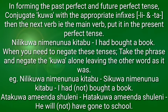In forming the past perfect and future perfect tense, we conjugate kuwa with the appropriate infixes: li for the past and tara for the future. Then the next verb — the main verb — is put in the present perfect tense. For example: nilikuwa nimenunuwa kitabu — I had bought a book.